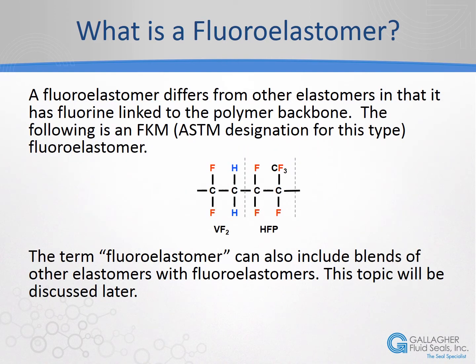What makes a fluoroelastomer different from other elastomers? In a fluoroelastomer, at least some fluorine atoms must be in the polymer structure, thereby protecting the polymer backbone. With the exception of fluorosilicones, which will not be covered in this presentation, the polymer backbone is made up of carbon-carbon bonds. Different atoms such as hydrogen, chlorine, or chemical groups may also be attached to this carbon backbone. The diagram shows a basic fluoroelastomer containing vinylidene fluoride and hexafluoropropylene. In general, if an elastomer contains fluorine it may be referred to as a fluoroelastomer, and this term may also be used for blends of fluoroelastomers with non-fluoroelastomers — an issue that will be discussed later.